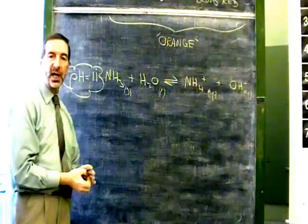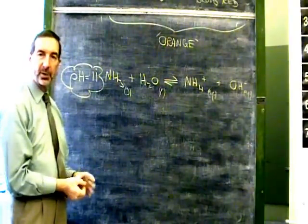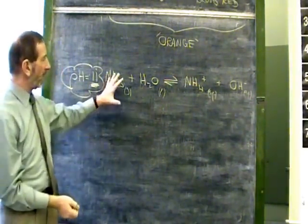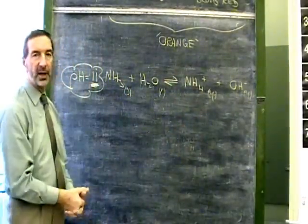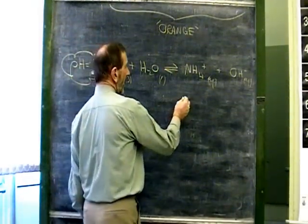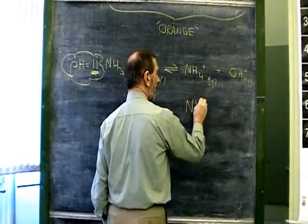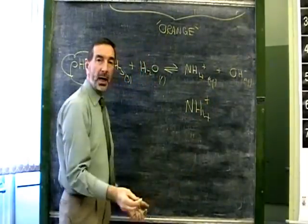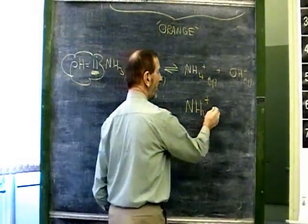If we left this for days or whatever, we'd find that the pH stayed at 11. But if we were to come along and alter the concentration of one of these, how would that affect the pH? Well for example, we might come along and add more ammonium ions. How could we add more ammonium ions? We might add something such as ammonium chloride.